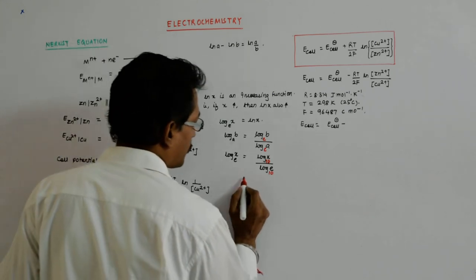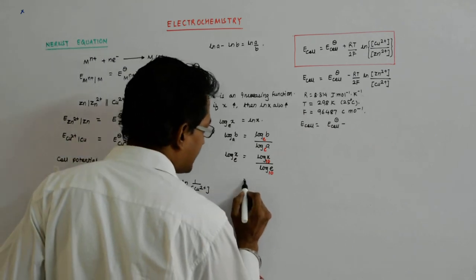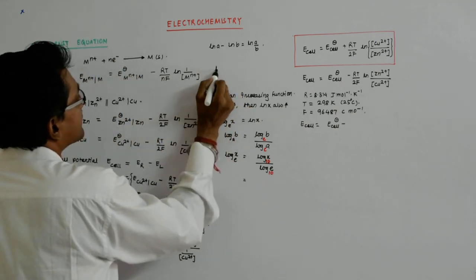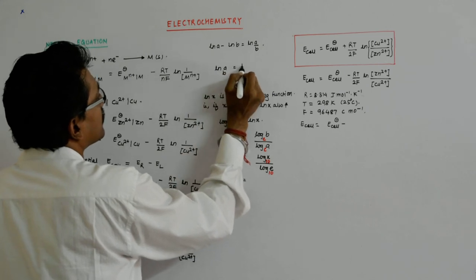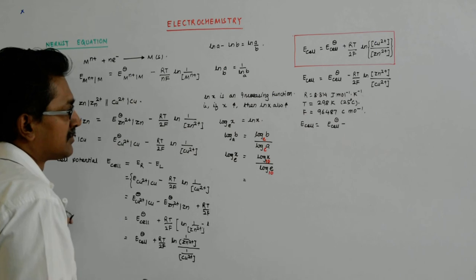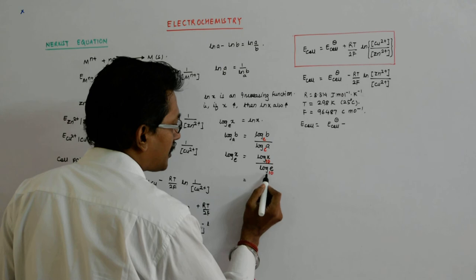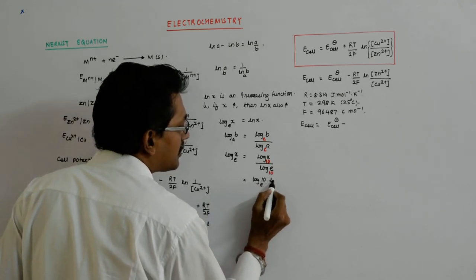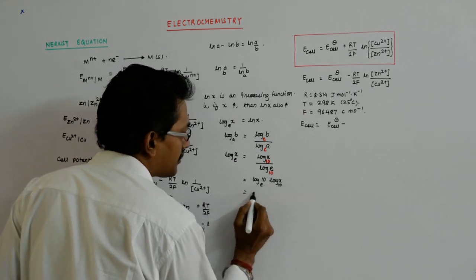This is actually... there's another formula of log which says ln a base b is equal to 1 upon ln b base a. So when this goes up, 1 upon this is actually log e base 10.